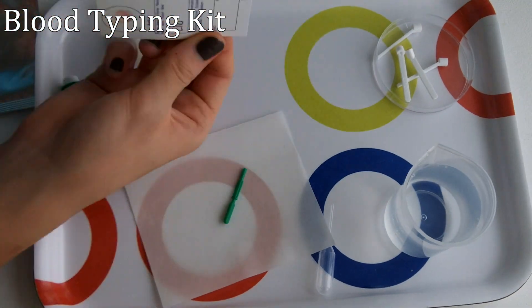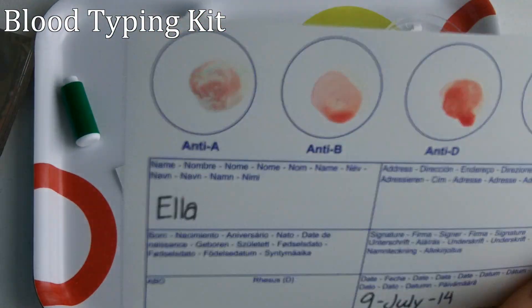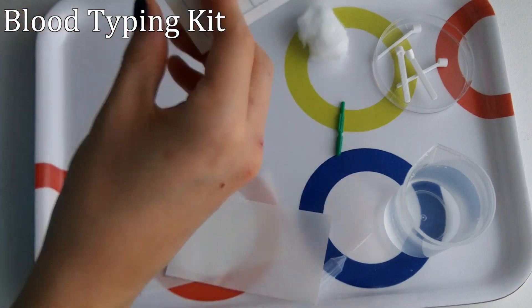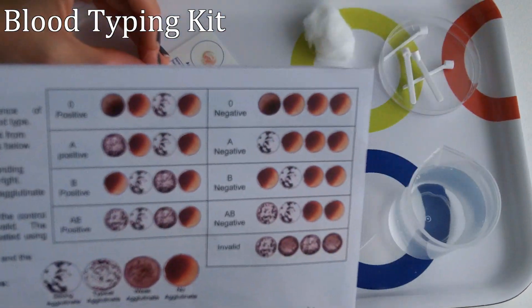Here, I am tilting the card to distribute the blood within the circles. Next, I placed the laminating sheet on top of the card. I compared my blood type to the pictures on the back of the card to determine my blood type.